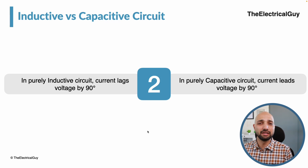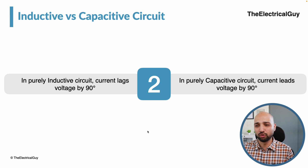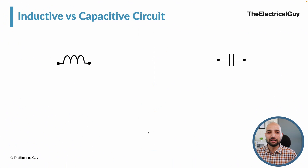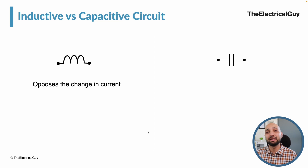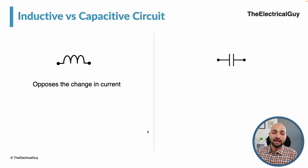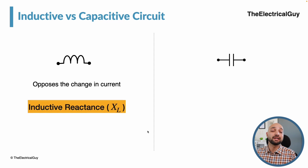There are dedicated videos explaining how inductors and capacitors work in AC — links are in the description. Now, the third difference: in an inductive circuit, the inductor opposes the change in current. This opposition is different from what a resistor offers, so we have a dedicated name for it. We call it reactance, and since it is offered by an inductor, we call it inductive reactance, denoted by XL.